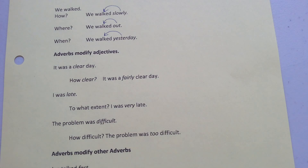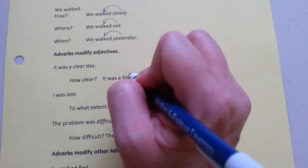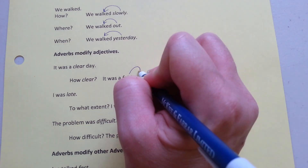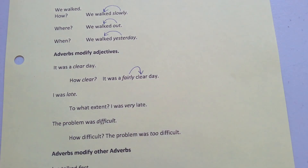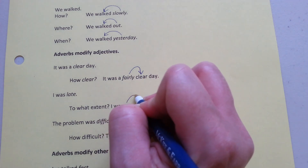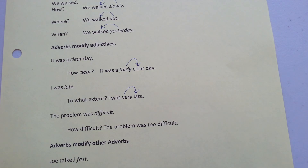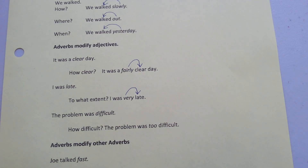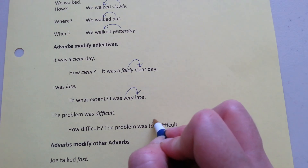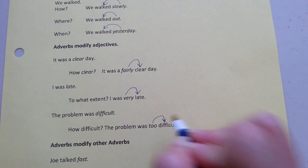Let's look at how adverbs modify adjectives. It was a clear day — how clear was it? It was a fairly clear day. I was late — to what extent? I was very late. The problem was difficult — how difficult? The problem was too difficult.